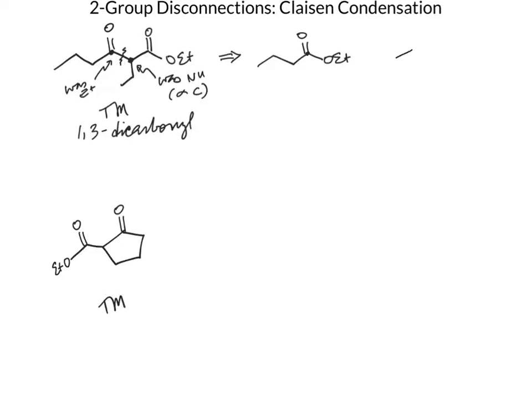The other component looks like this. If I highlight my nucleophilic center — the alpha-carbon — and my electrophilic center — the carbonyl carbon — and compare the two structures, we see that it's actually a self-Claisen condensation. So starting with ethyl butyrate in some base, followed by workup, would give us our target molecule.